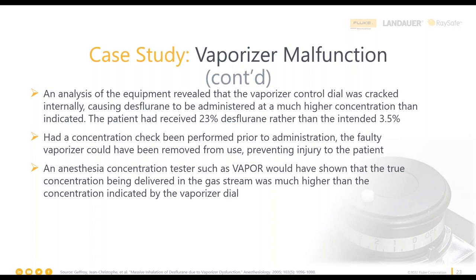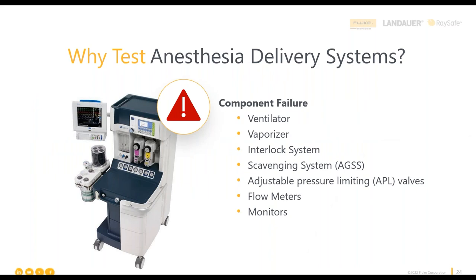So why should we test anesthesia machines? That case study is a reminder that things can and do go wrong. The anesthesia delivery system has a lot of parts, and routine maintenance can detect component and system failures. It's here to provide respiratory support and deliver agent, but it takes a lot of parts to do that, and any one of them can fail. There are tools that can help you detect those failures. Let's talk through how they can improve your testing.